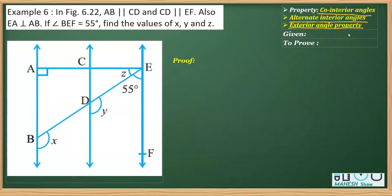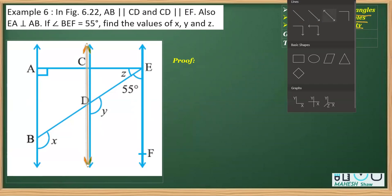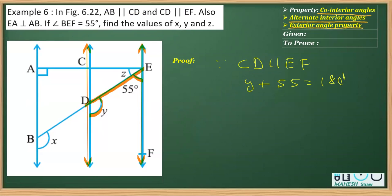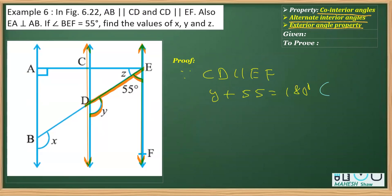Now we have to find the measurement of x, y, and z. First, I'm considering these two lines — CD and EF — with a transversal. You can clearly see that these two angles are the co-interior angles. So we can write: since CD is parallel to EF, therefore angle y plus 55 is equal to 180 degrees. The reason is co-interior angles.